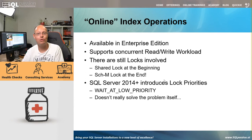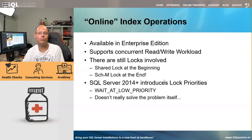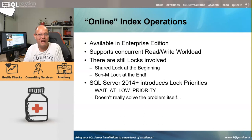Beginning with SQL Server 2014, Microsoft introduced so-called lock priorities. When you have a blocking situation with an online index operation, you can specify how to handle it — you have two options: roll back the online index operation itself, or roll back the transactions that are blocking the online index operation. The duration you specify is in minutes, with a minimum of one minute. This is more or less a workaround; the original problem isn't really fixed, because there are technical reasons why those locks are needed by design.